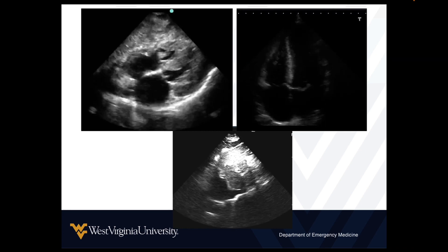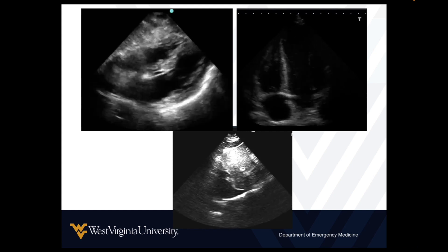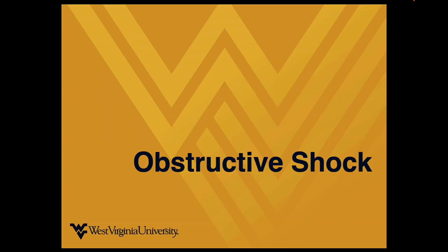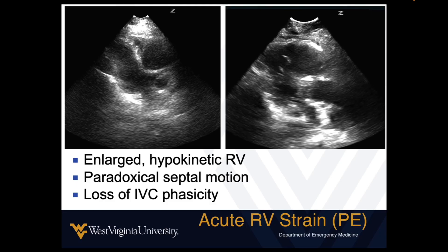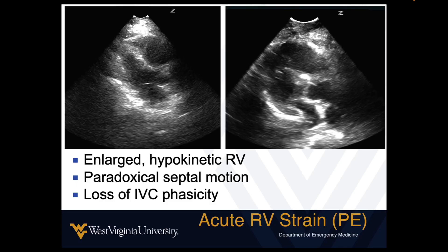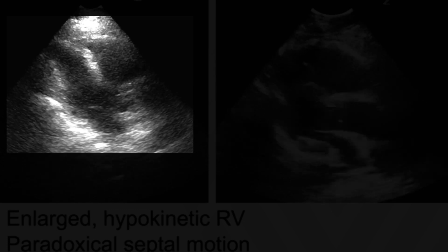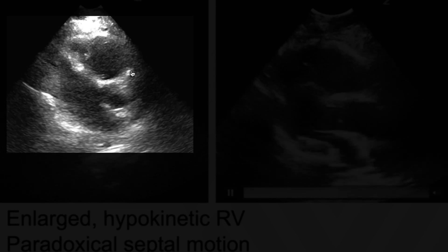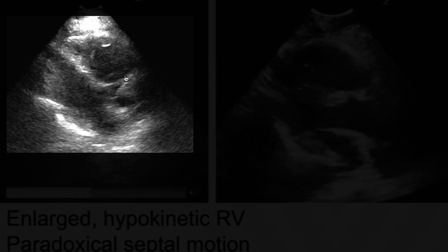This is the typical physiologic appearance of hypovolemic, hemorrhagic, or distributive shock — assuming the patient has a baseline of pretty normal physiology. Now, obstructive shock — what's that going to look like? One form of it, if it's from a massive PE, you're going to see a big, giant right ventricle that compresses the left ventricle. That's the main thing to remember.